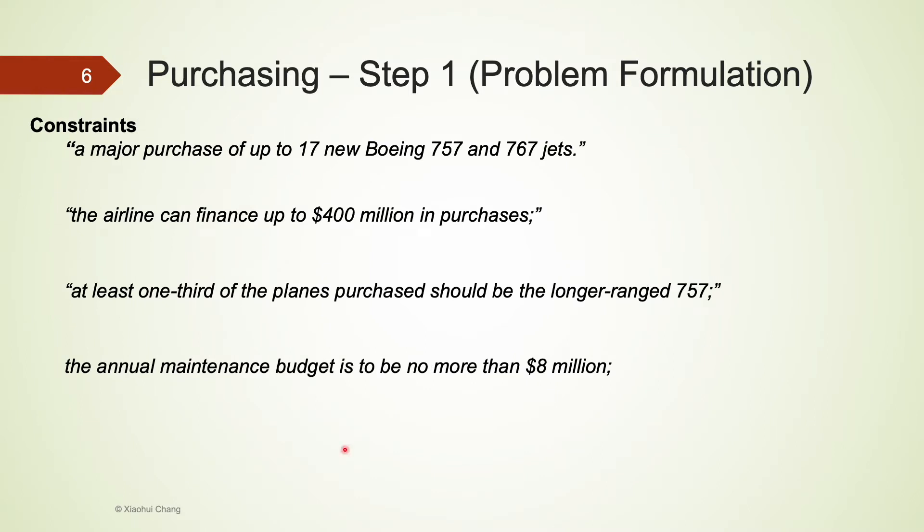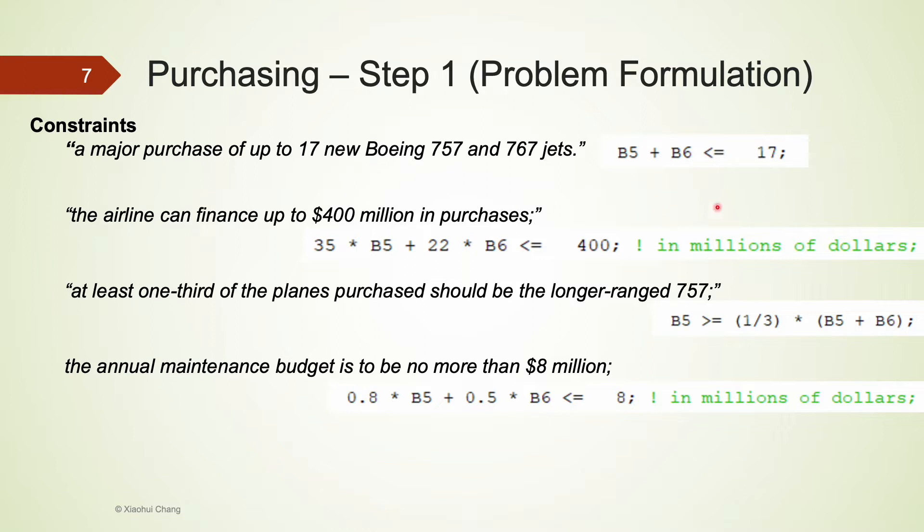There are four constraints for this problem. The airline can only purchase up to 17 new jets in total. That means B5 plus B6 cannot be more than 17. The planes are very costly. The airline can finance up to 400 million in purchases. Each 757 jet costs 35 million, while each 767 jet costs 22 million. So the total cost, that is 35 multiplied by B5 and 22 multiplied by B6, cannot be more than 400 million dollars.